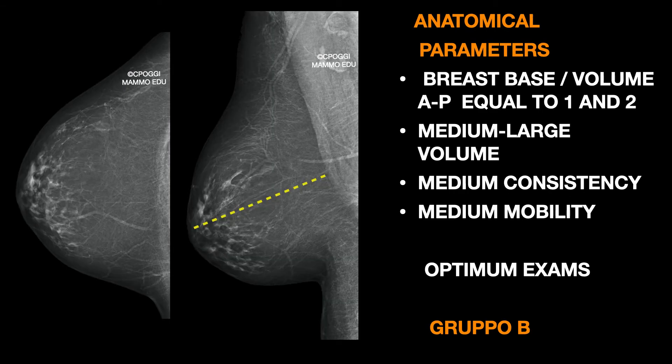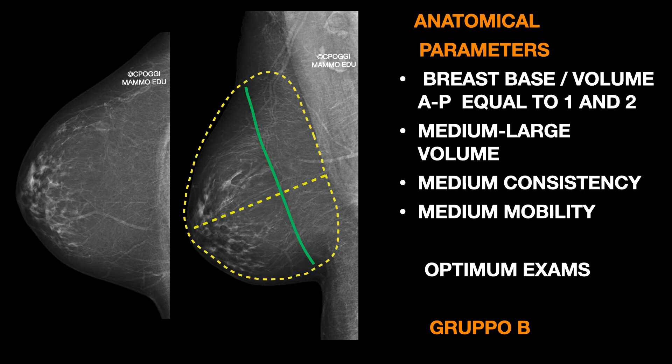The breasts in Group B have a ratio between the breast base on the chest wall and the volume in the anterior-posterior direction especially, which tends to 1, or from 1 to 2. A medium to large volume with medium consistency and mobility. It is easy enough to be pulled away from the thorax and stretched out and compressed. There is no such thing as an easy breast to document on a mammogram, but the higher percentage of optimum exams belongs usually to this group.